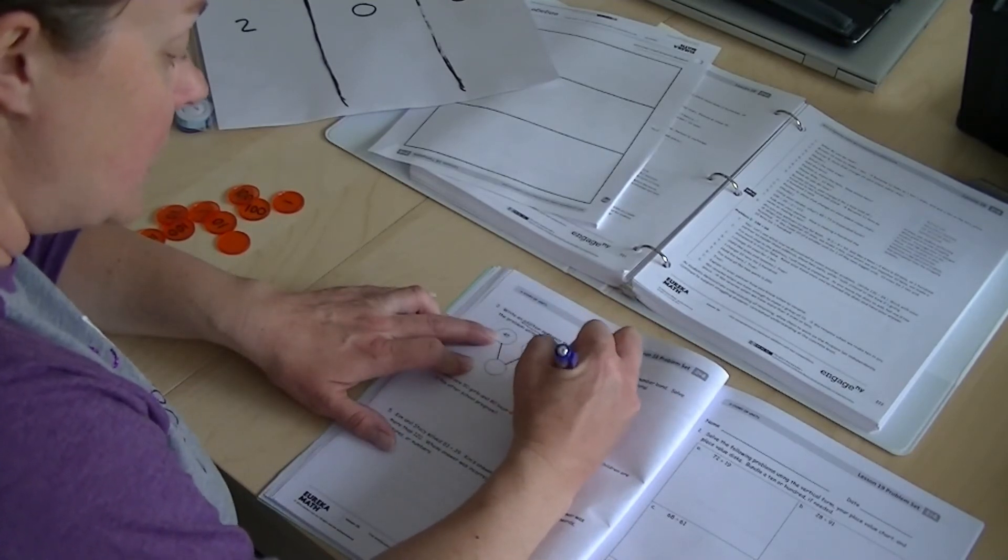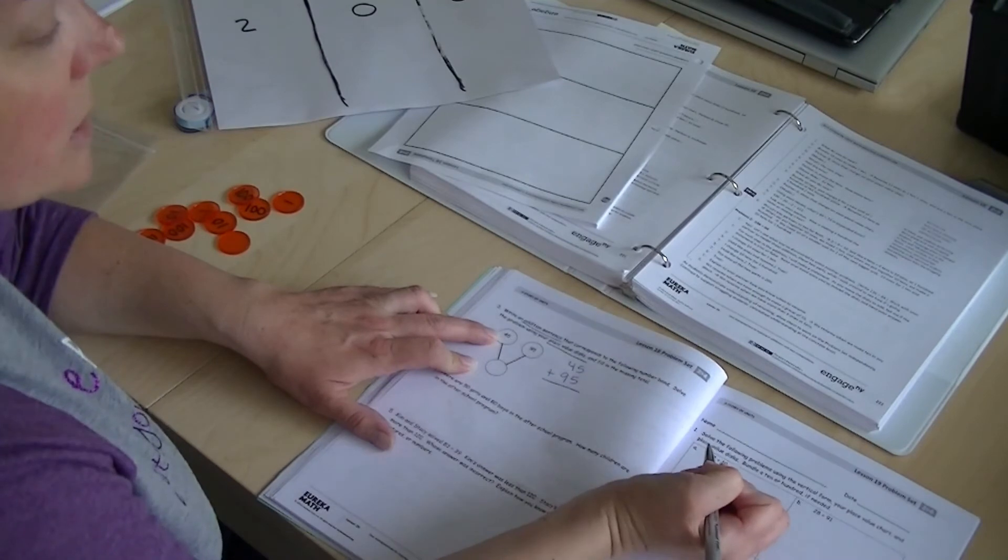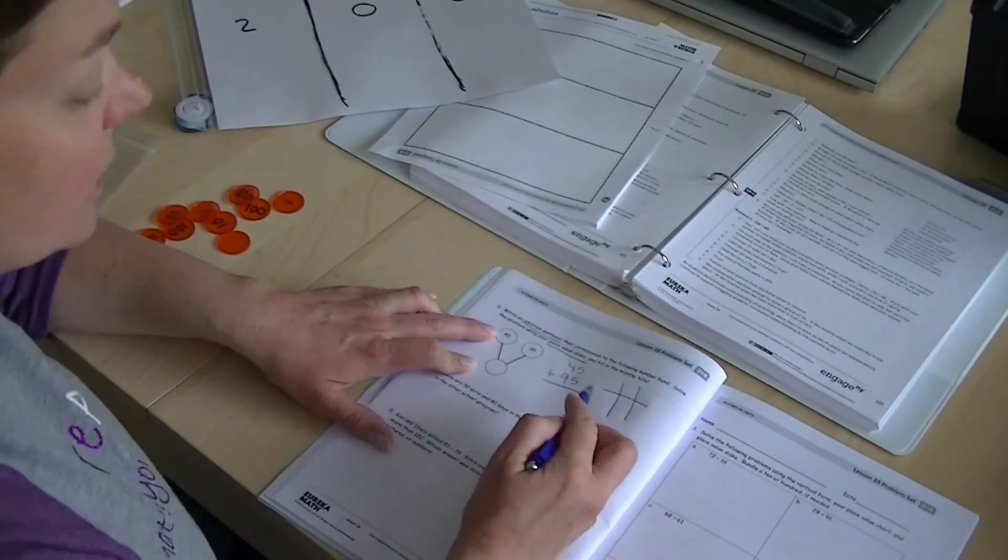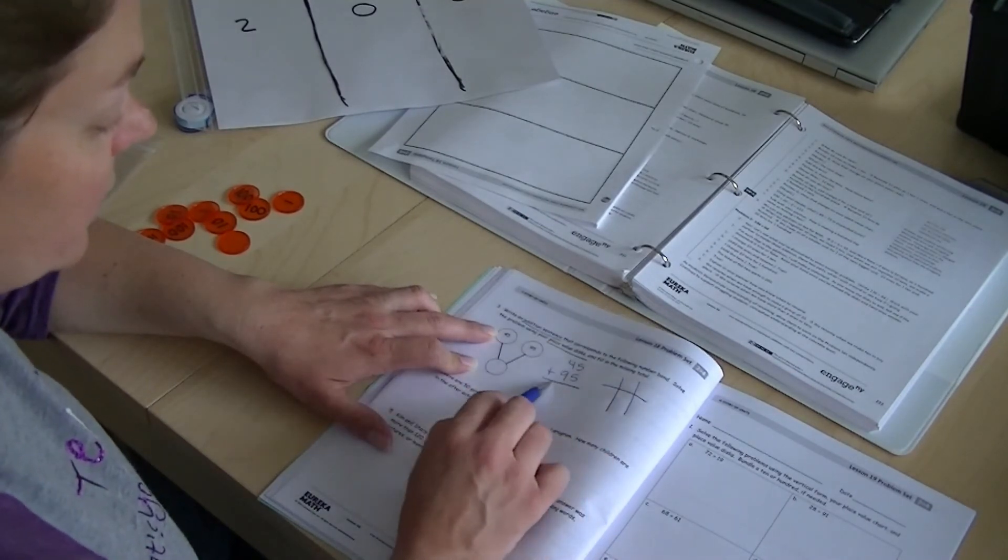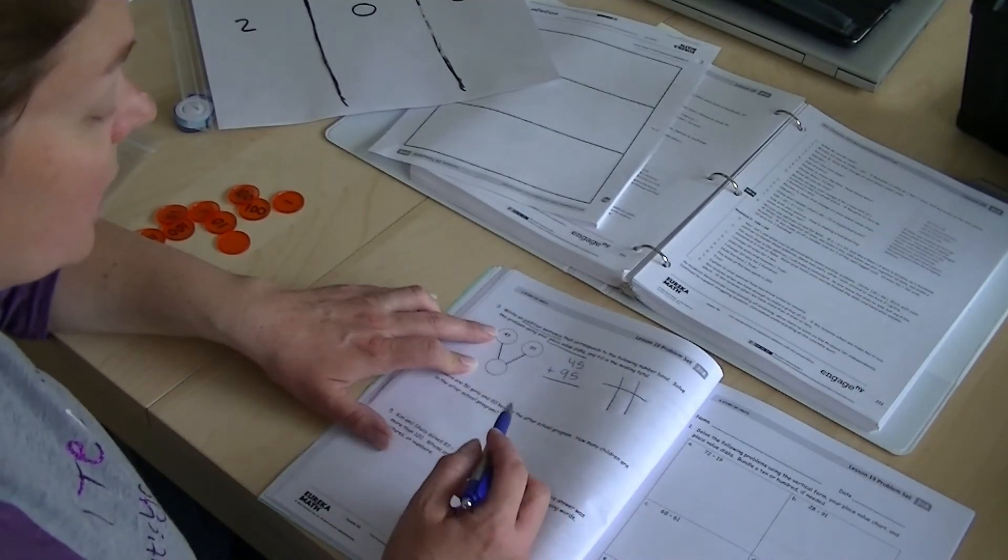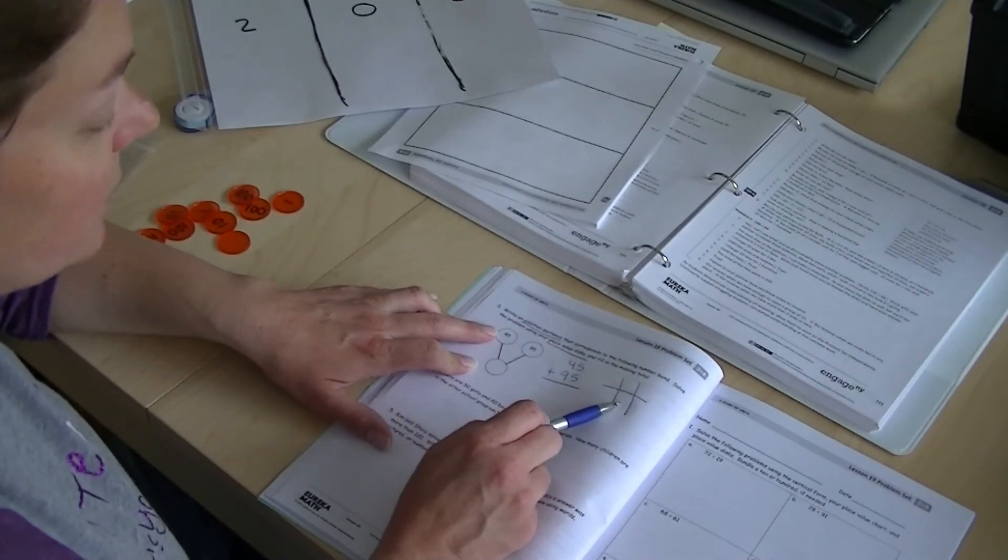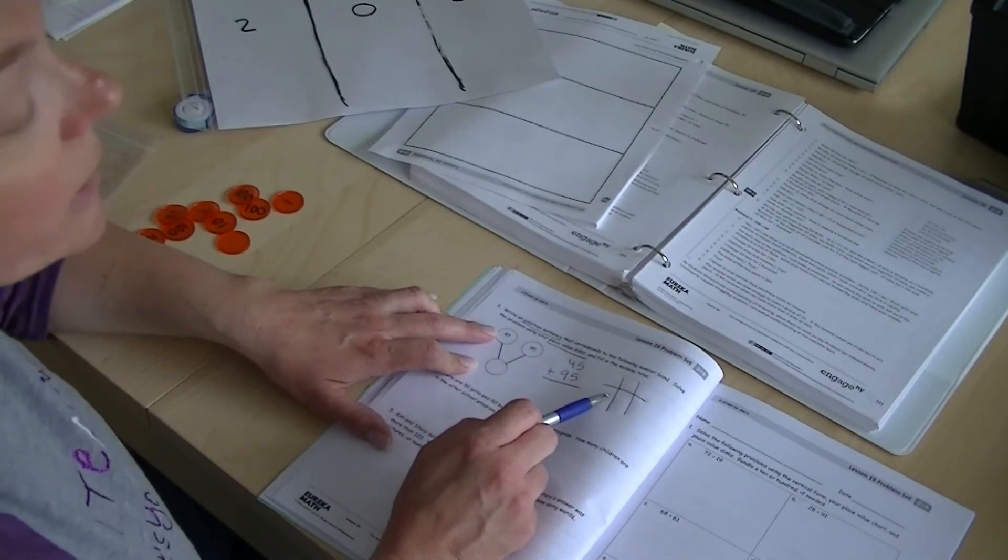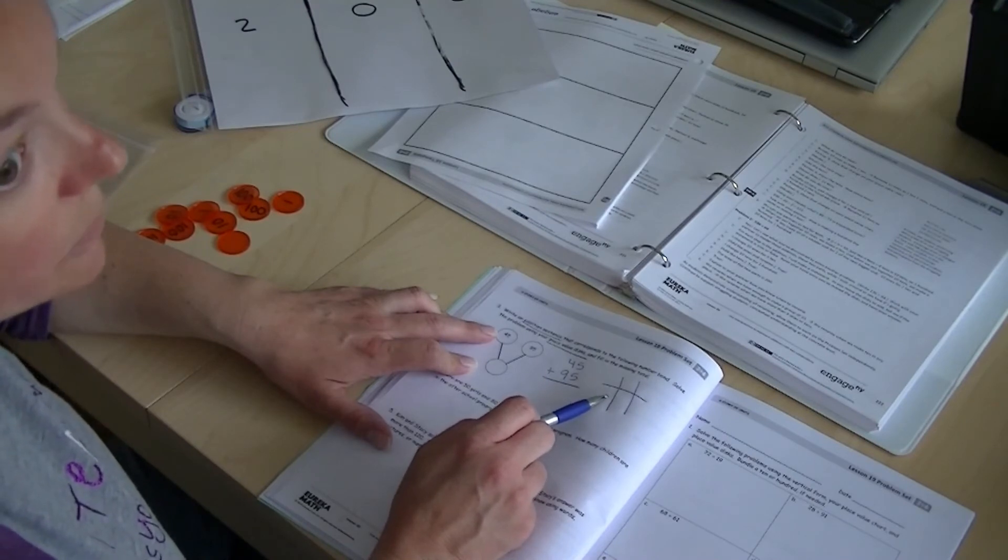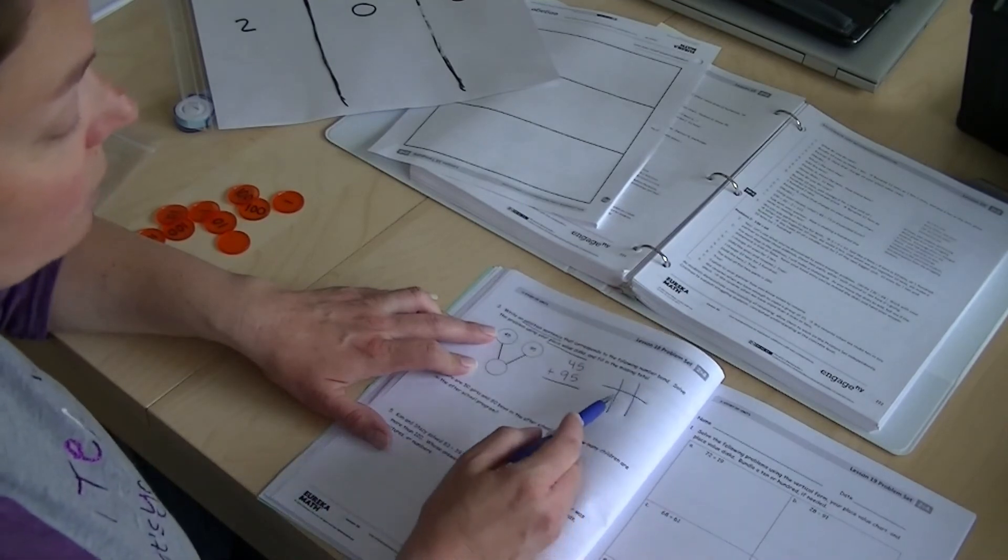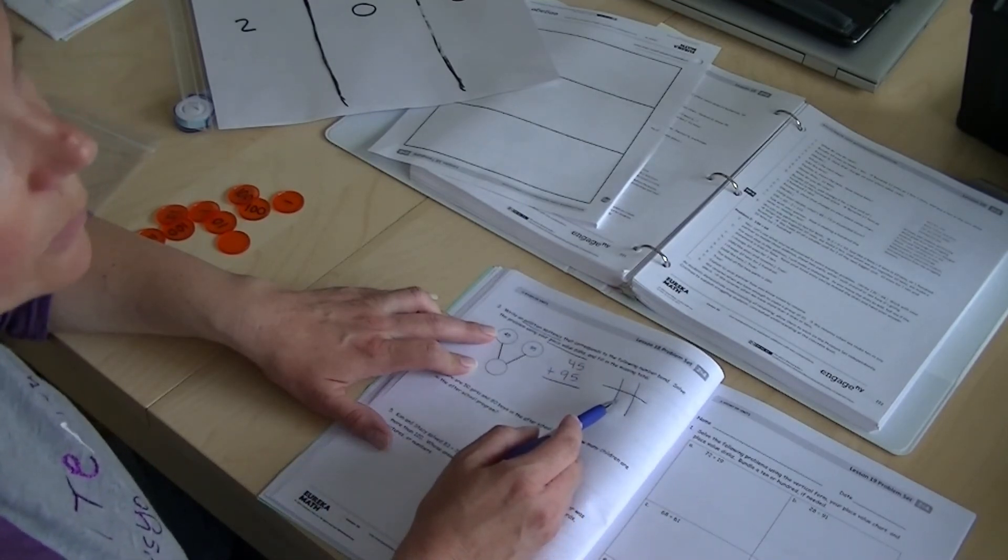45 plus 95 equals. Use your place value disks. Draw them in there. Whatever you get as your answer, it goes down here. Now, I know that some of you are able to do this without doing the place value disks. I still want you to show me with your place value disks. This is extremely important because you will be using these disks in other years. So I want you to be able to do it really well and quickly as a second grader so that you can do it easily as a third and fourth grader.